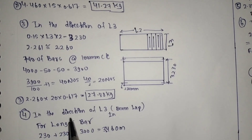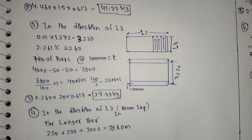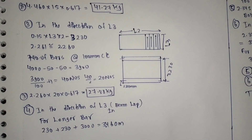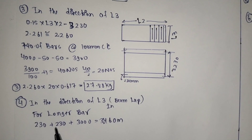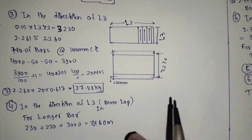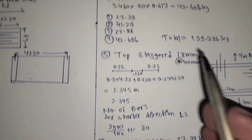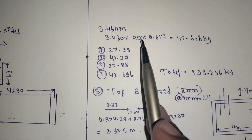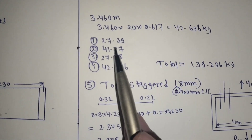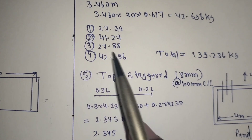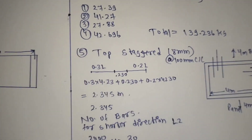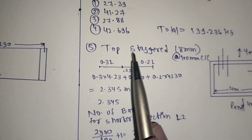For the longer bar: 3 meters plus 230 plus 230 mm gives 3.460 meters. Computing 20 into 0.460 into 0.617, we get a summary of 139.236 kg for the staggered top bar, which is the tension reinforcement.